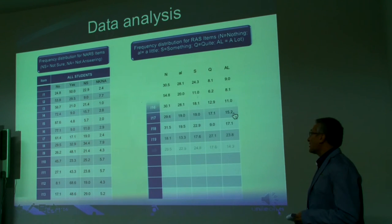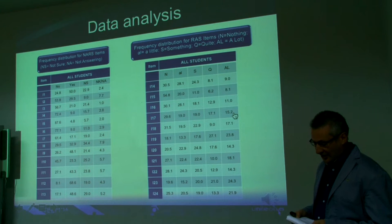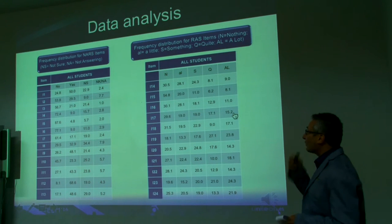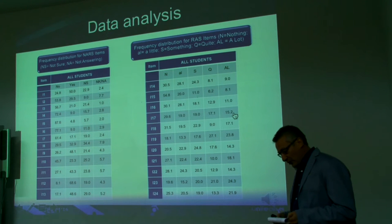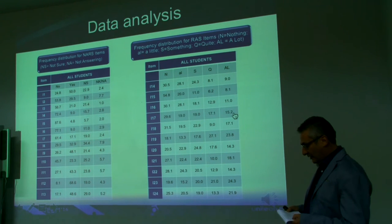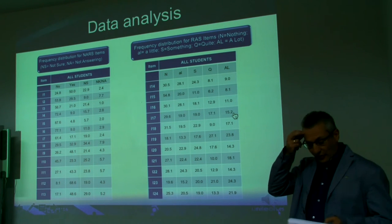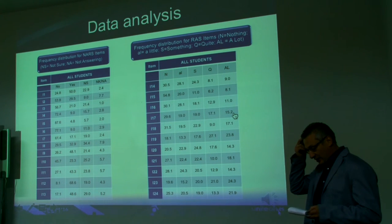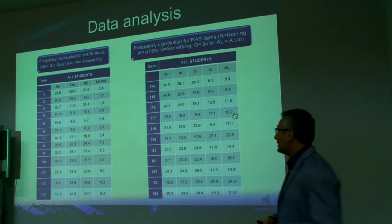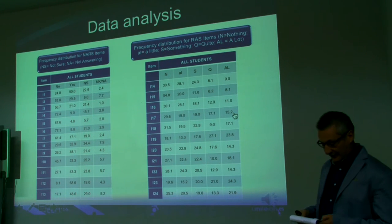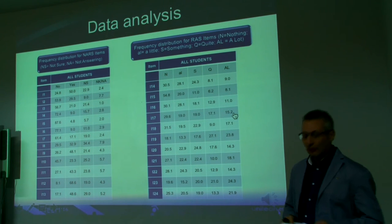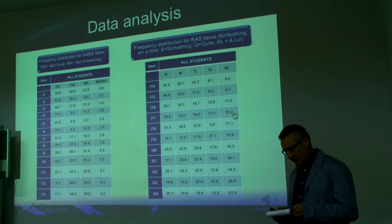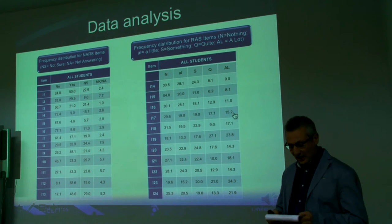A summary of the frequency answer to NARS and RAS scale can be seen in the following tables. This table shows the distribution of the difference as well for each item, organized by groups defined by age. It is possible to see differences in attitude toward robots between students depending on the age group.